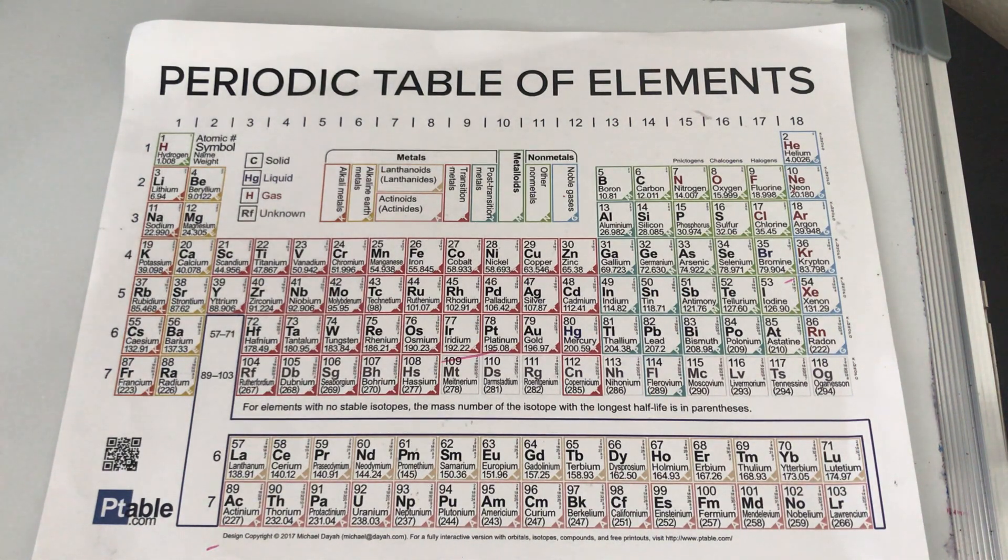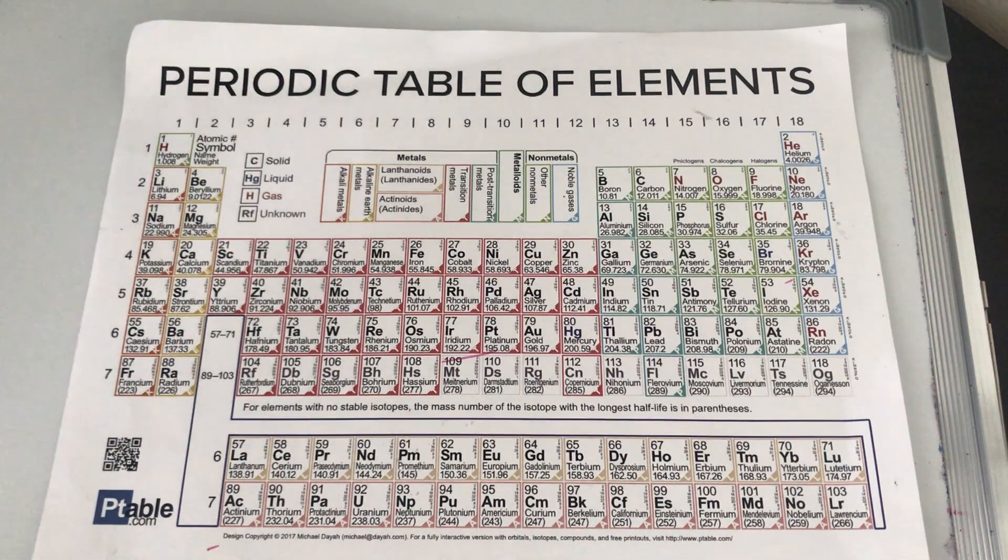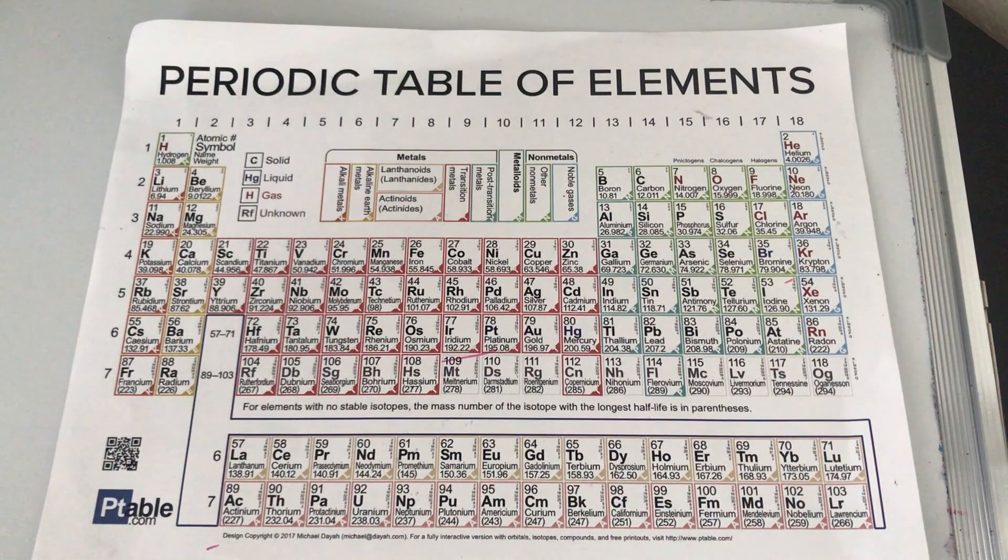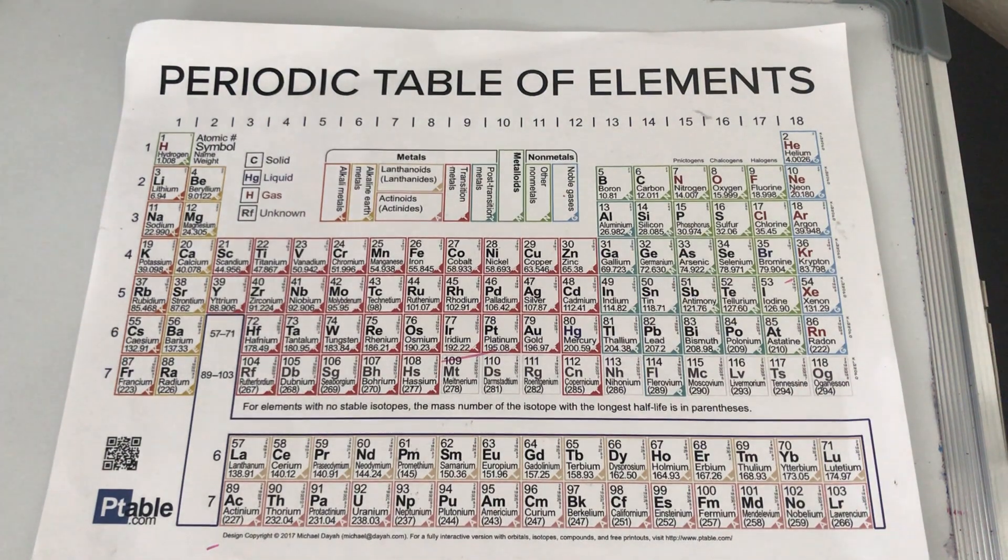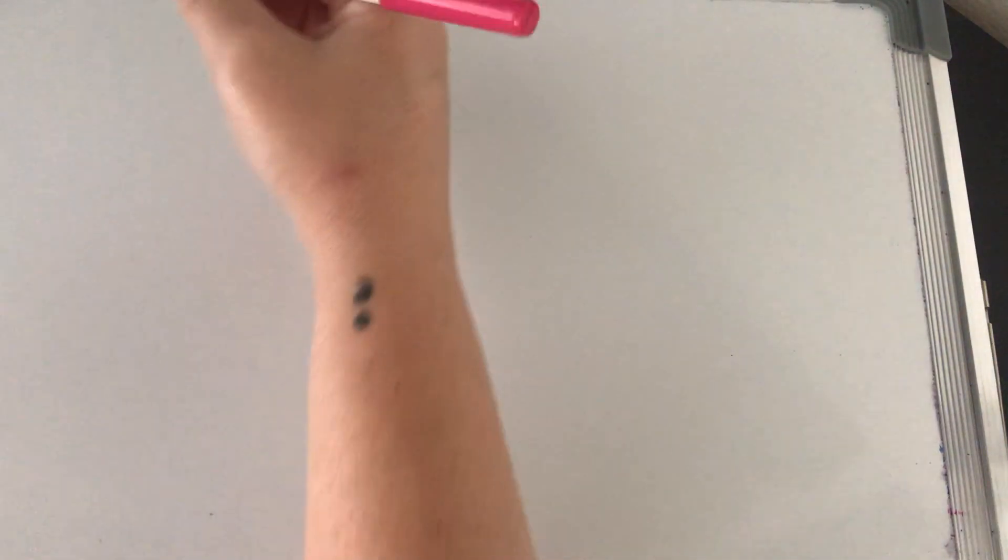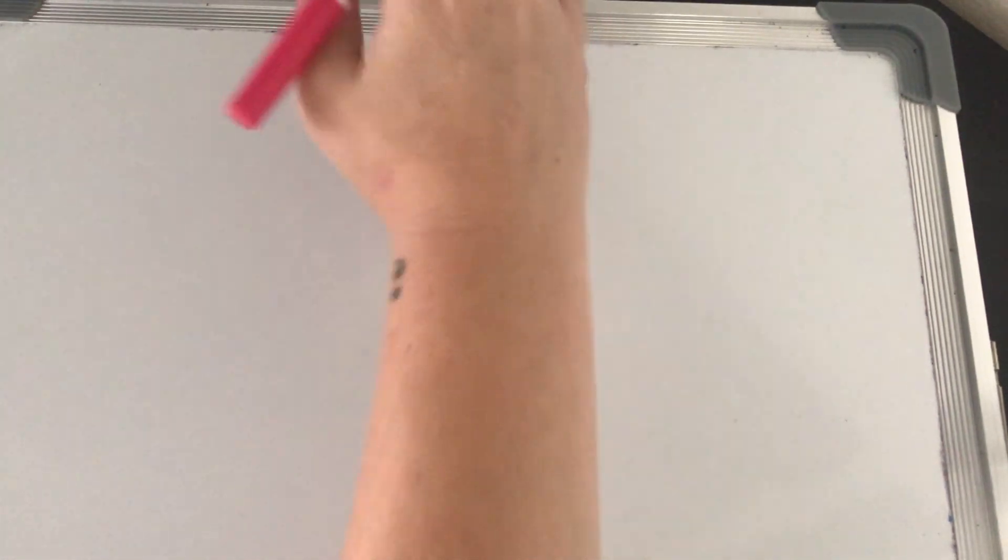So if you were given the number of protons and the number of neutrons and you were asked for the atomic mass, you would add those two together to get the atomic mass. But what if you asked for the neutrons first and didn't provide the neutrons?